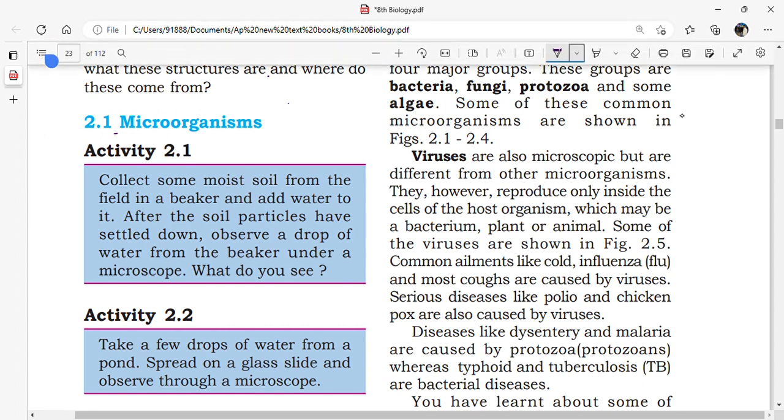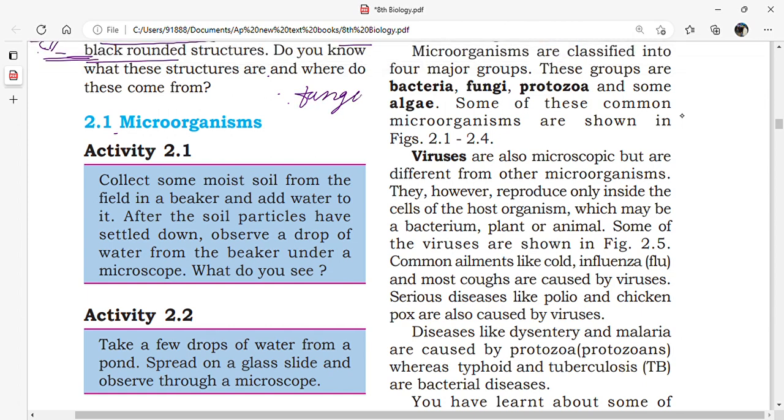They will spread easily on the food items. That's why these are actually called fungus. Fungus will always grow on dead and decaying organisms or dead and decaying food substances. They will easily grow on them.